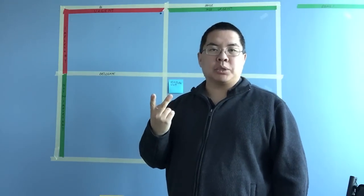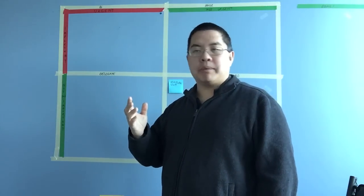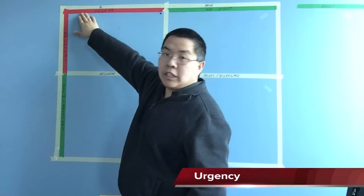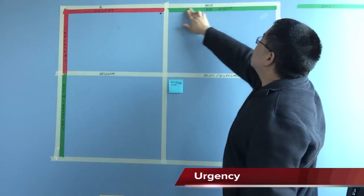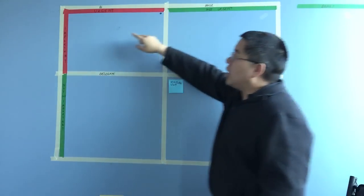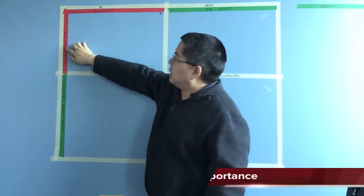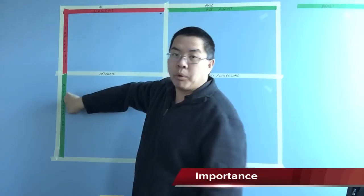It's based on two different things, sort of an urgency and importance framework. So tasks that have varying degrees of urgency, which is either red or green, urgent or not urgent, and importance. We have stuff that's important and not important.